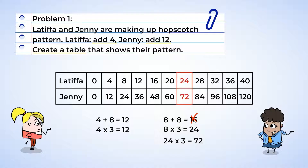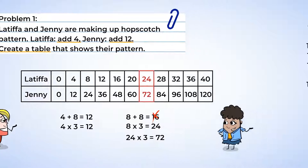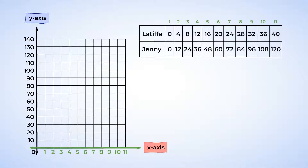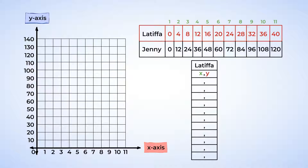Now that we've filled out the table, we can graph these values on a coordinate plane to help us visually compare them. We'll use the box number for our x coordinate and the number inside the box for the y coordinate. Let's start with Latifah's numbers. The first box means x is 1 and the number inside is 0, so our coordinate is (1, 0). The second box gives us (2, 4). Doing that for the rest gives us: (1,0), (2,4), (3,8), (4,12), (5,16), (6,20), (7,24), (8,28), (9,32), (10,36), and (11,40).